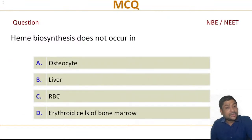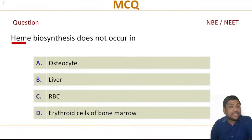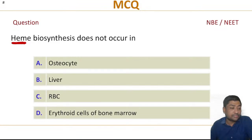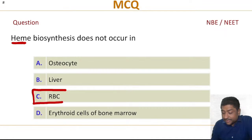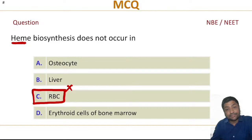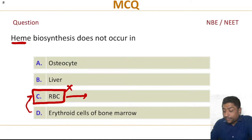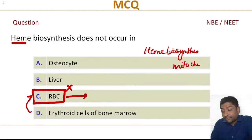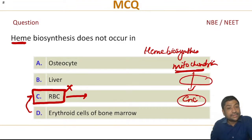Next question — a very favoritely repeated question you should not get wrong: where does heme biosynthesis NOT occur? Options: osteocyte, liver, RBC, erythroblasts of bone. The answer is RBC — mature RBCs do not have heme biosynthesis. Heme biosynthesis happens in erythroblasts, and once they become mature RBCs there is no heme synthesis. Why? Because heme biosynthesis starts in the mitochondria — first two steps in mitochondria, then in cytoplasm, and the last few steps again in mitochondria. Since mature RBCs have no mitochondria, no heme biosynthesis is possible.